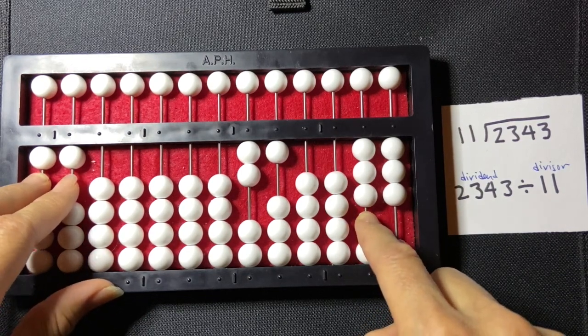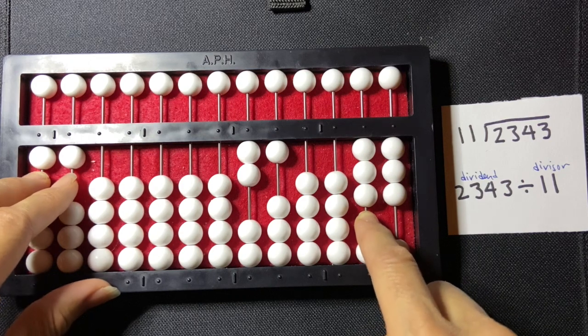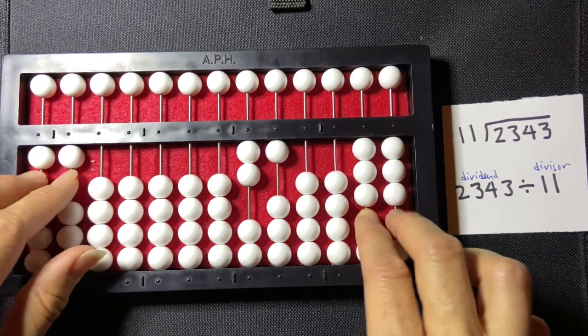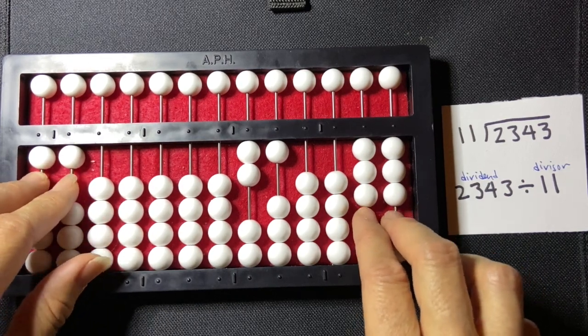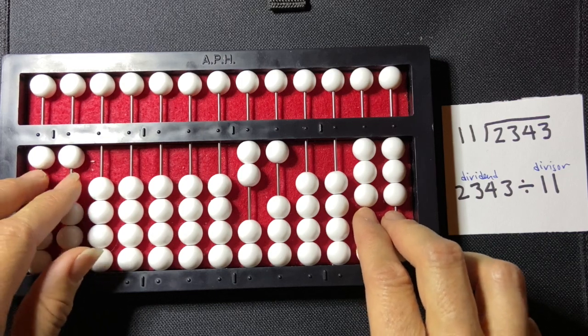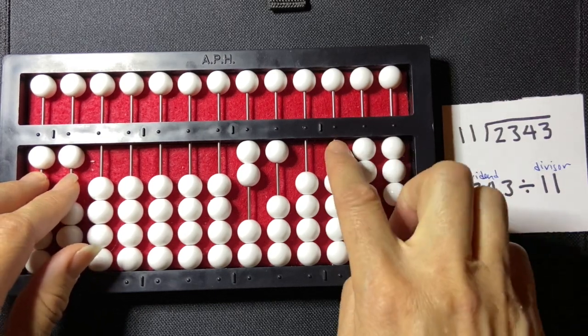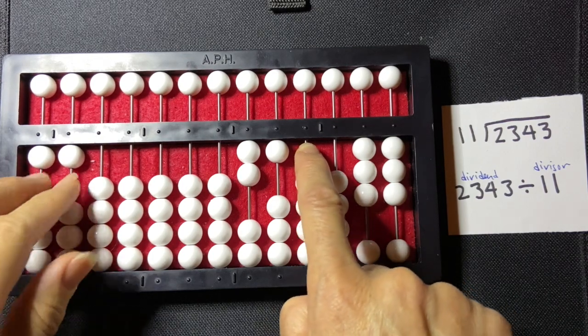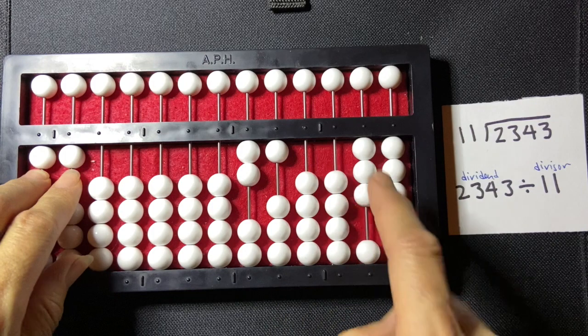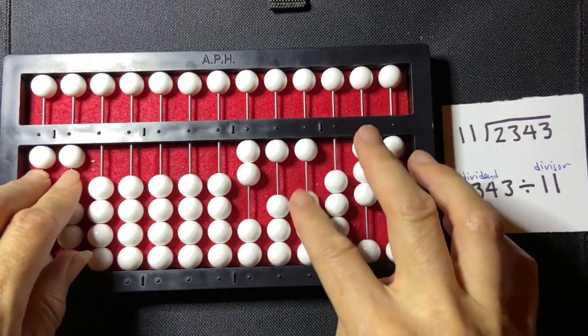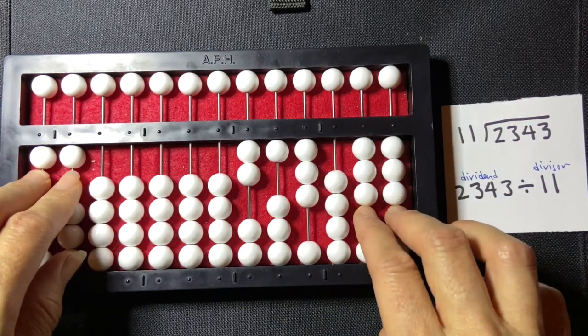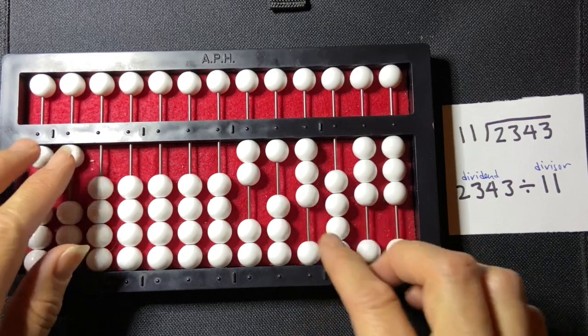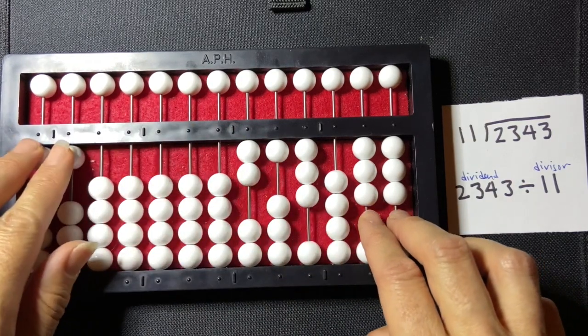And now I'm in the 10s rod, and I'm going to compare my divisor to my dividend again. And 11 is smaller than 33, so I'm going to skip a rod and I'm going to start here in my 1,000s rod. And I'm going to say, how many 11s go into 33? 3, it's 3. 1, 2, 3, and I'm going to multiply 3 times 11.